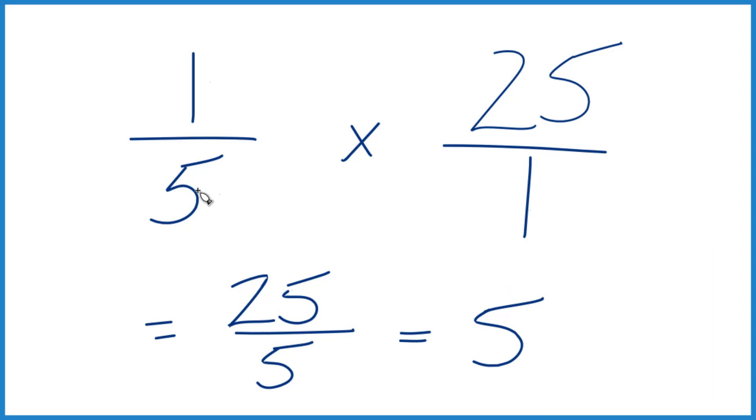So what we did, we took one-fifth and instead of 'of', we multiplied and we put that number over 1 so everything lined up. Then we multiply numerator, denominator, we end up with 5.